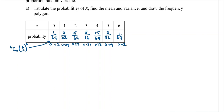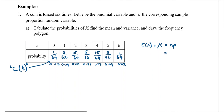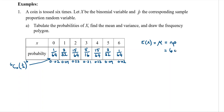We've filled in the table, and now we need to find the mean and variance. The mean (expected value of x) is n times p from our formula. With n equal to 6 and p equal to 1/2, the mean is 3 — which is the centre of the data. The variance is npq: 6 times 1/2 times 1/2, which is 3/2 or 1.5.